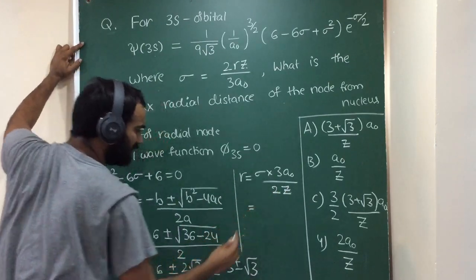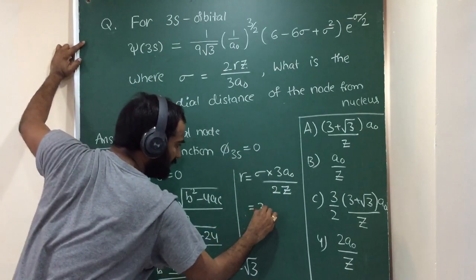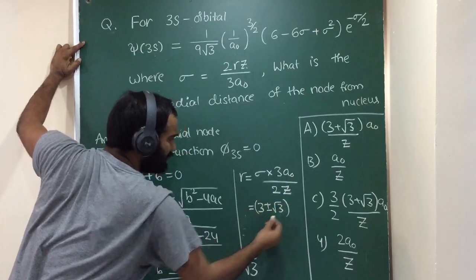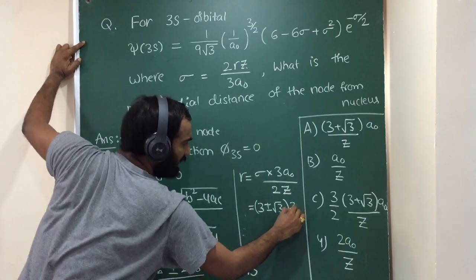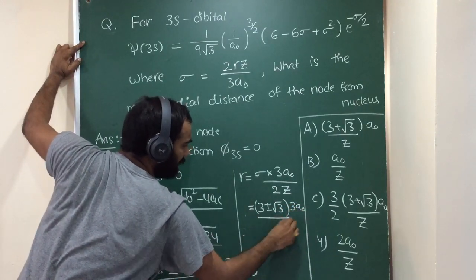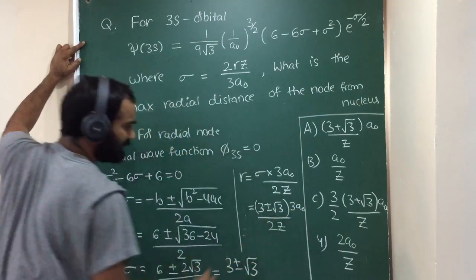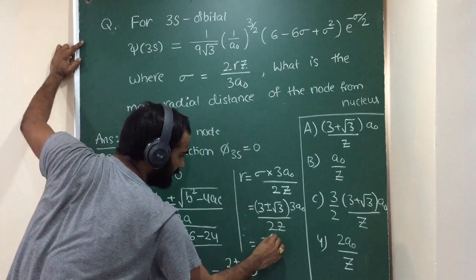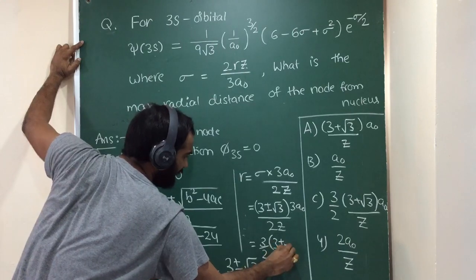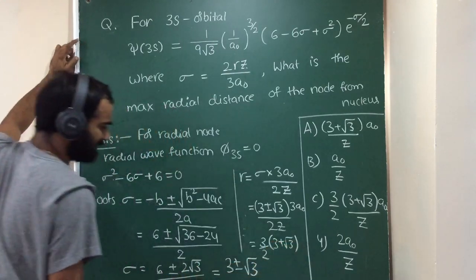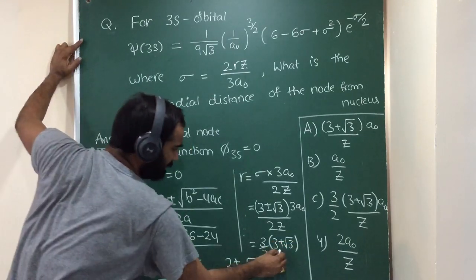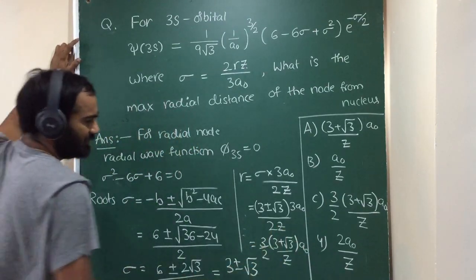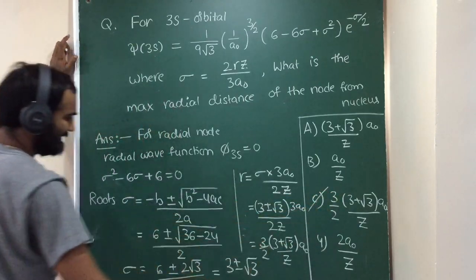From that, sigma equals 3 plus or minus root 3 into 3A0 by 2Z, which equals 3 by 2, 3 plus root 3 by Z into A0, which is option C.